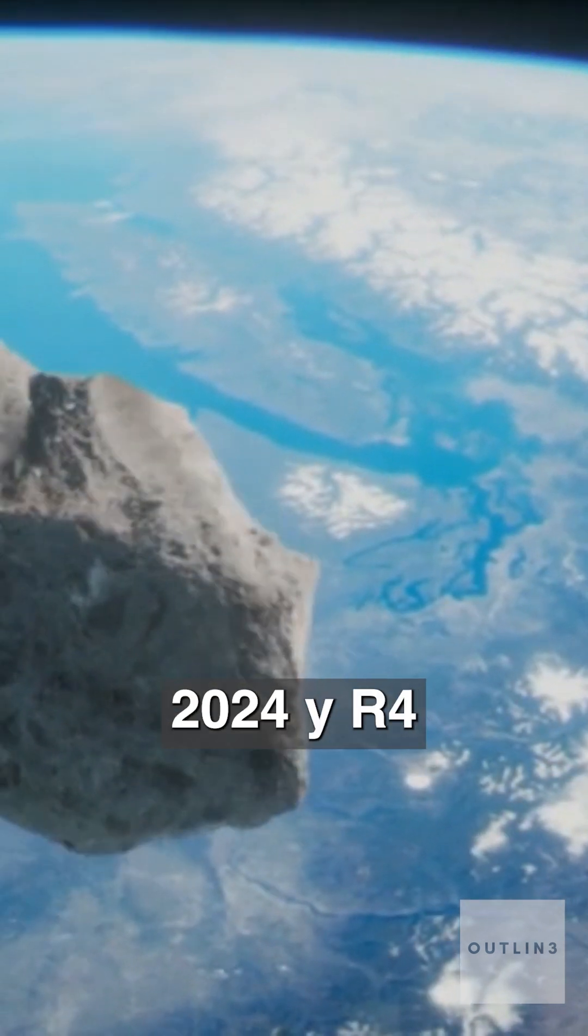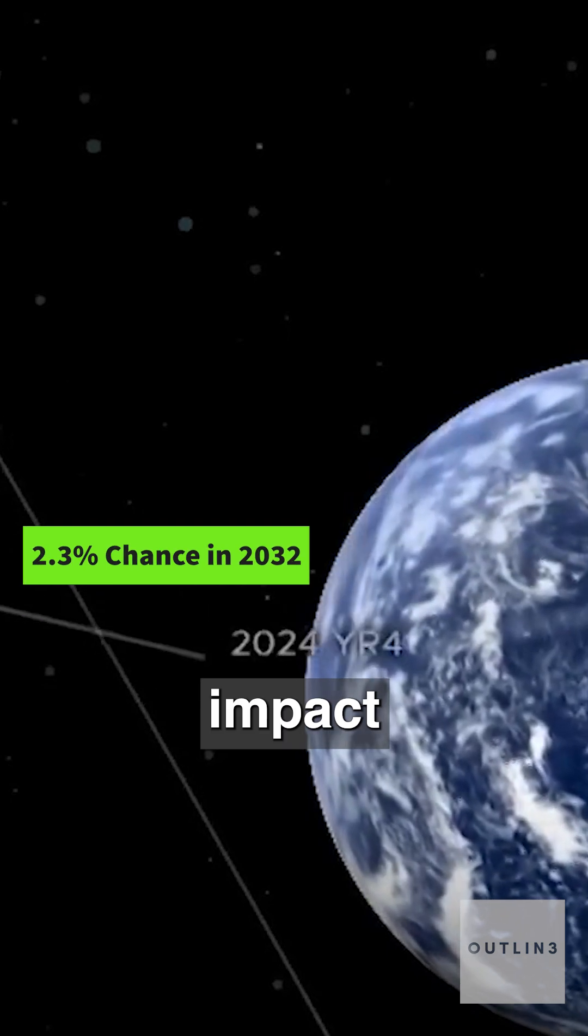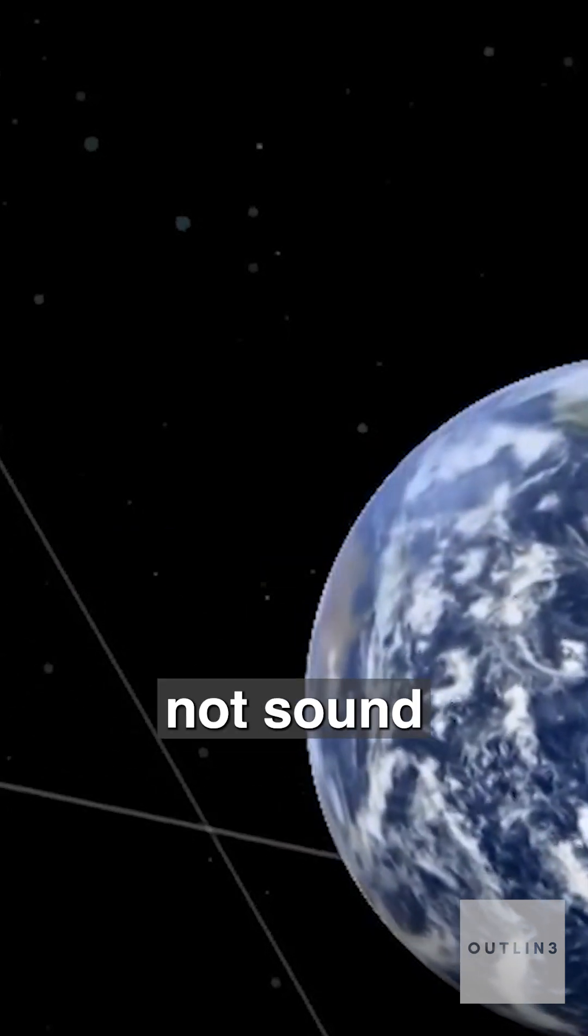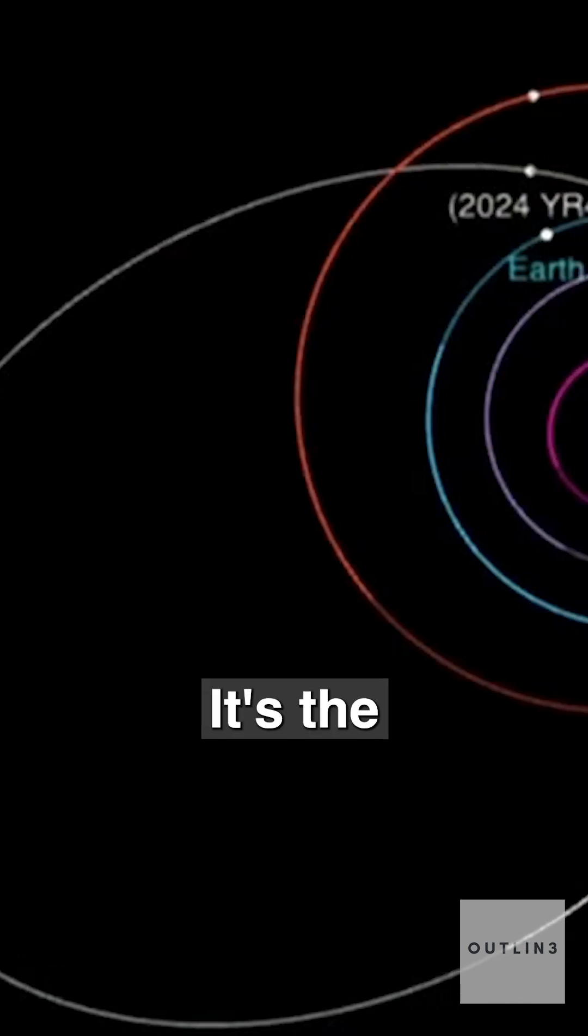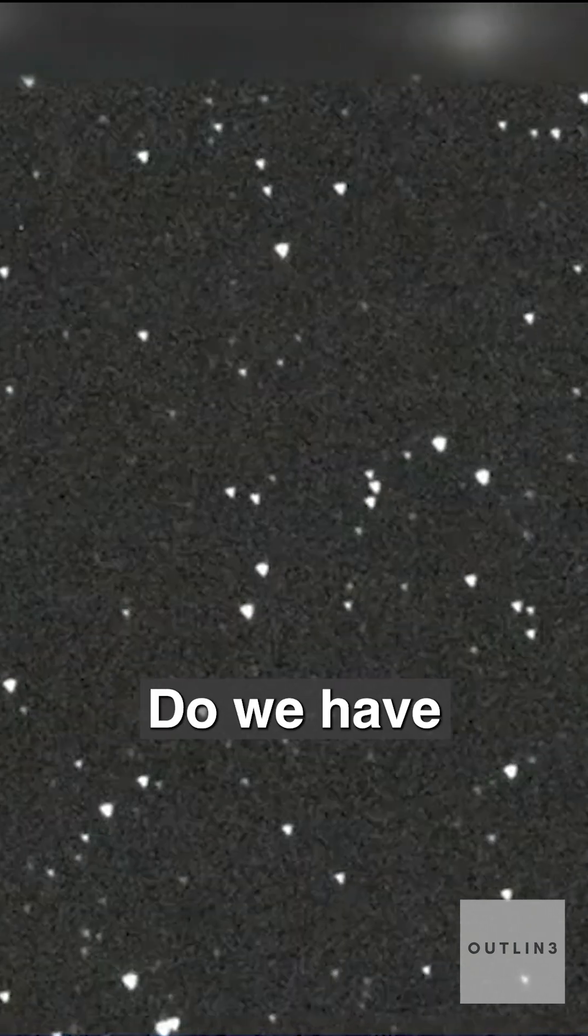Right now, asteroid 2024 YR4 has a 2.3% chance of impact in 2032. That might not sound like much, but for scientists, it's a big deal. It's the most at-risk asteroid we've seen since Apophis. So what happens next? And if it does head our way, do we have a plan?